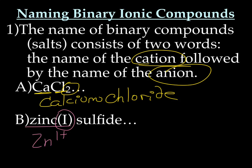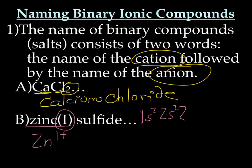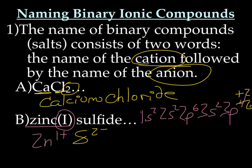For sulfide, we have to figure out the charge on a sulfur ion: 1s2, 2s2, 2p6, 3s2, 3p4. It's a non-metal, so it's going to gain electrons — it gains 2 to make 3p6. So sulfide is S2-. Then we have to write the formula and make the charges neutral. We need to add another Zn1+, so now the charges cross out because they're neutral, and we have Zn2S.